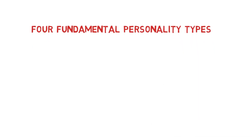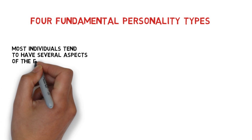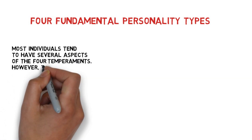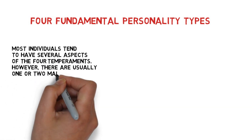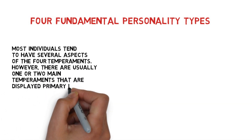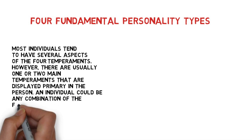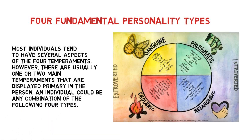Four fundamental personality types. Most individuals tend to have several aspects of the four temperaments. However, there are usually one or two main temperaments that are displayed primarily in the person. An individual could be any combination of the following four types. Take a look at the picture to see the traits that are typical for each of these temperaments.